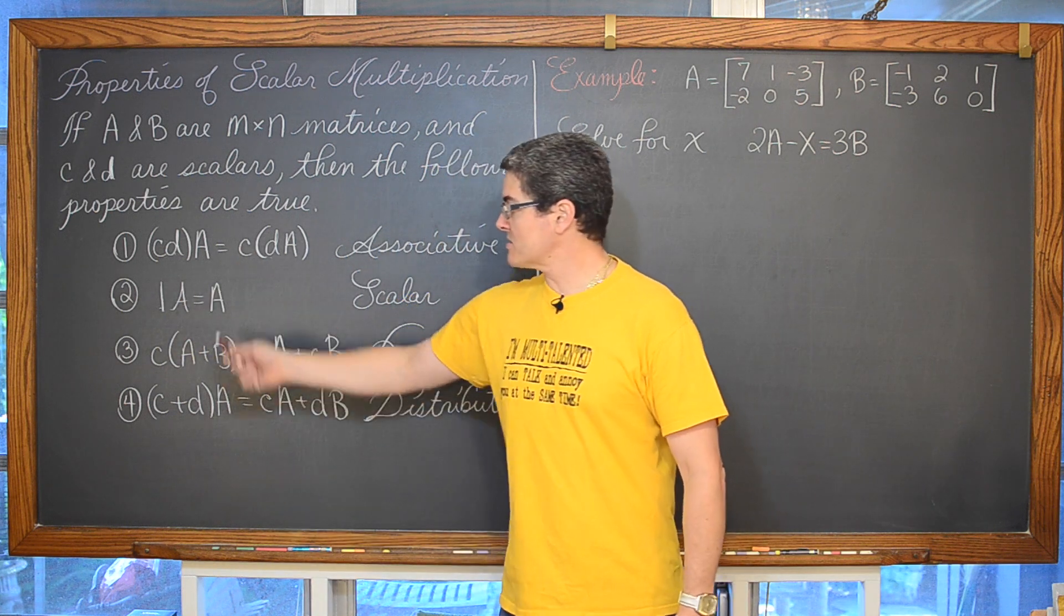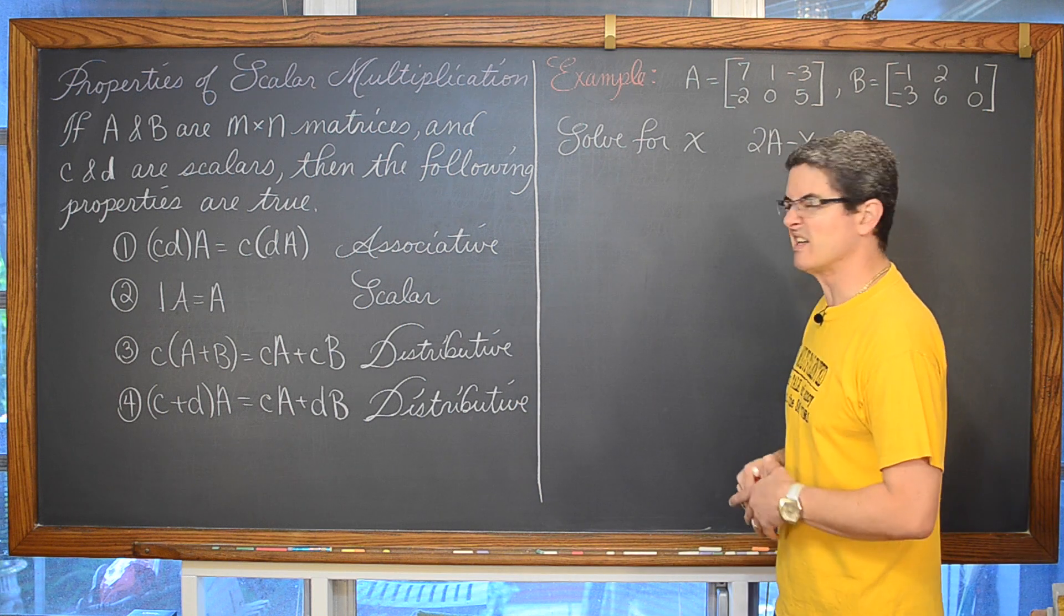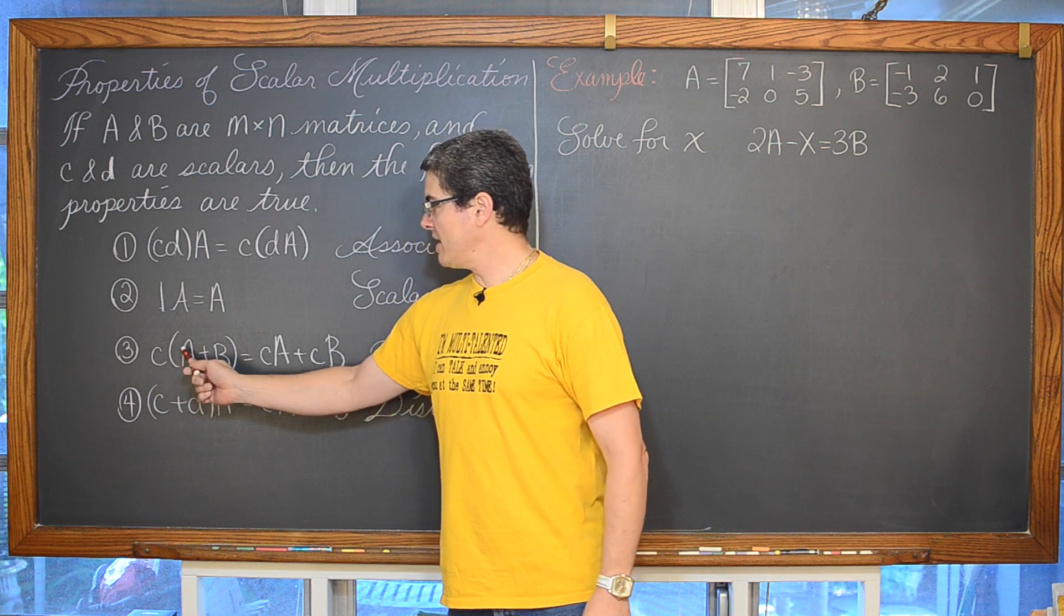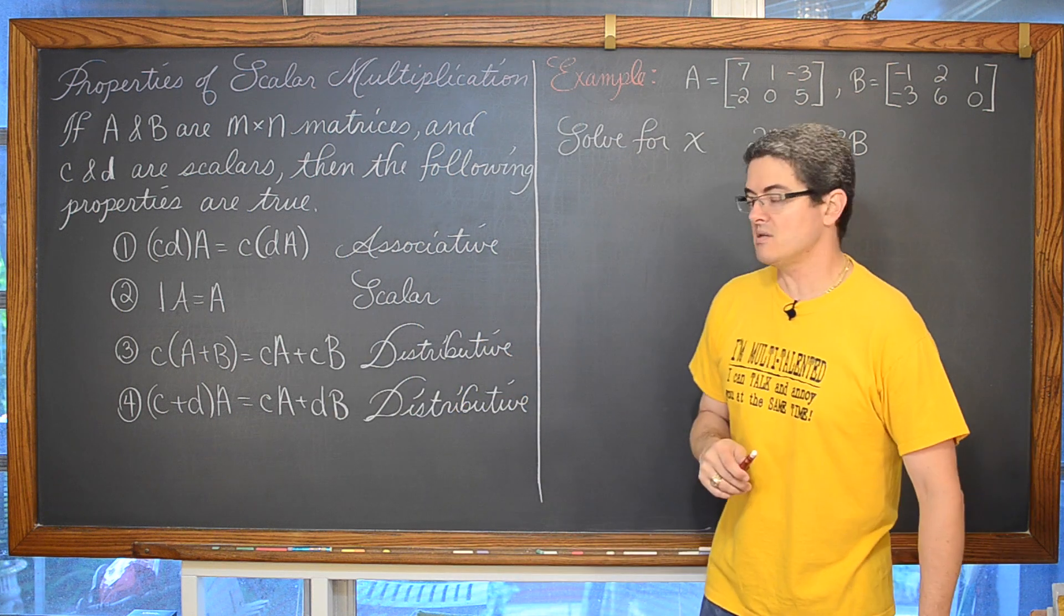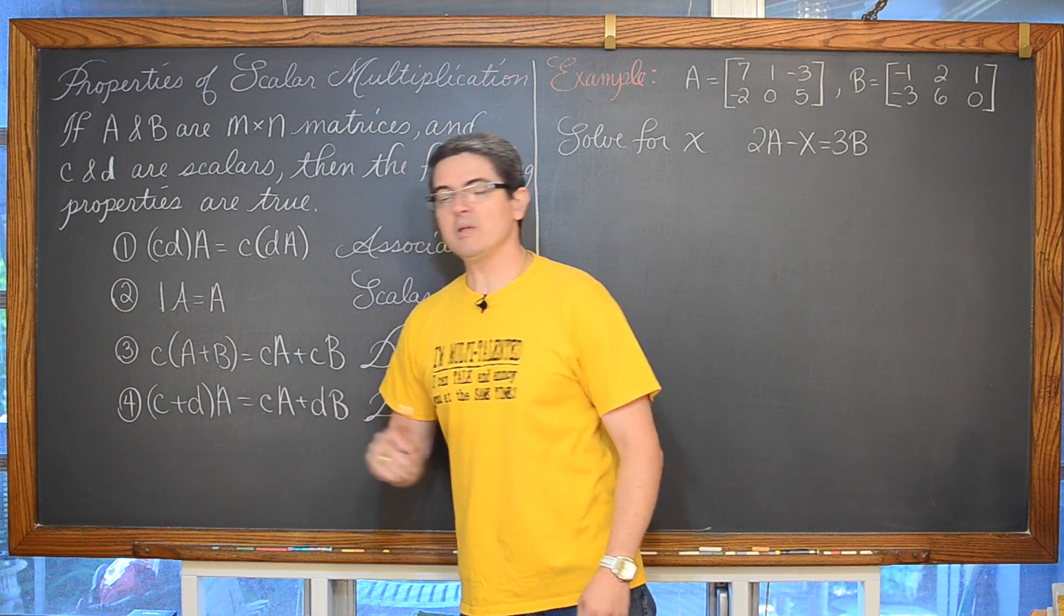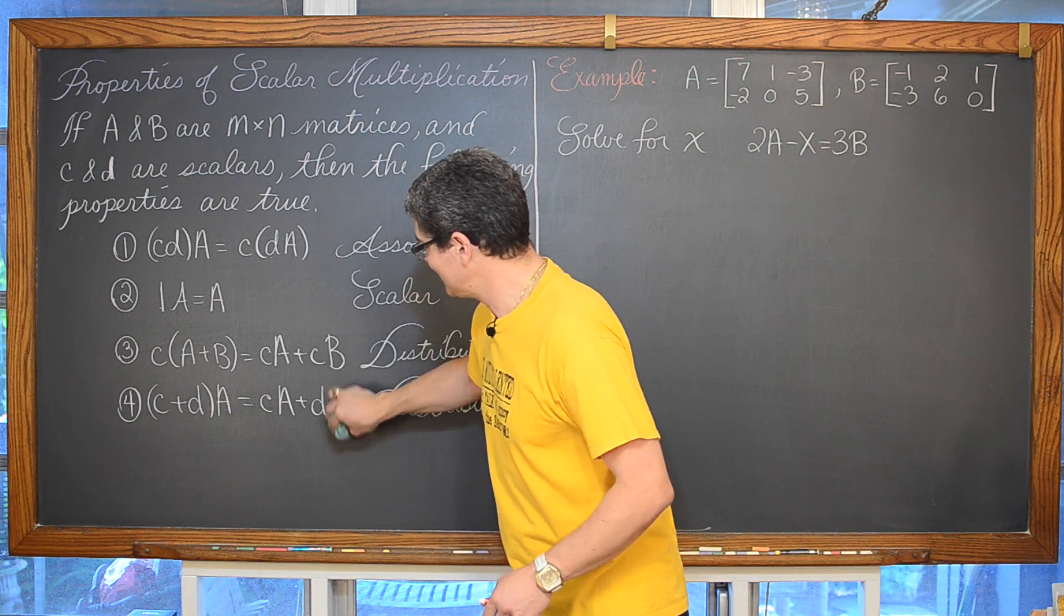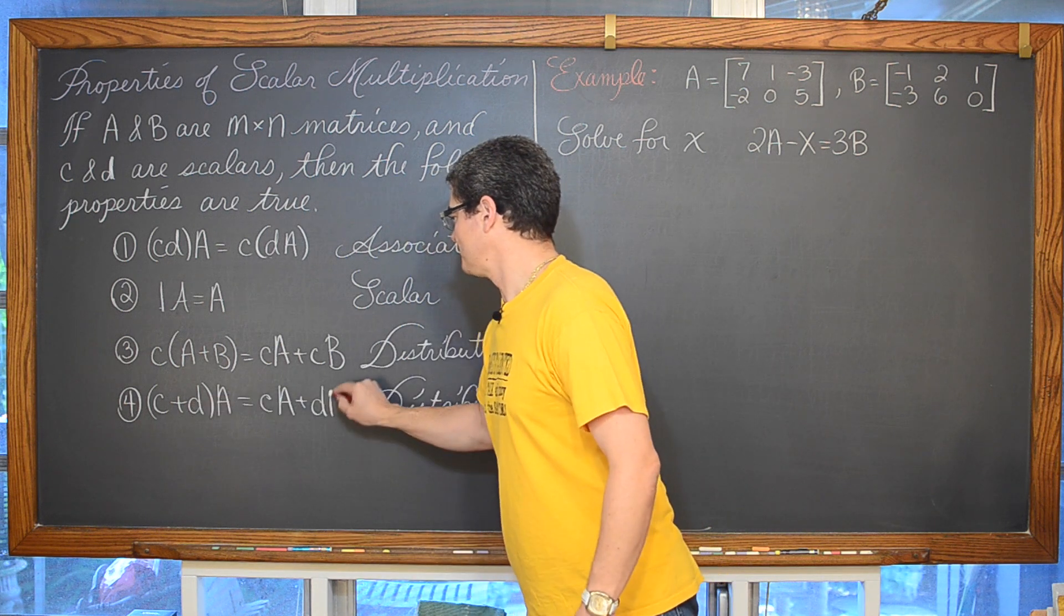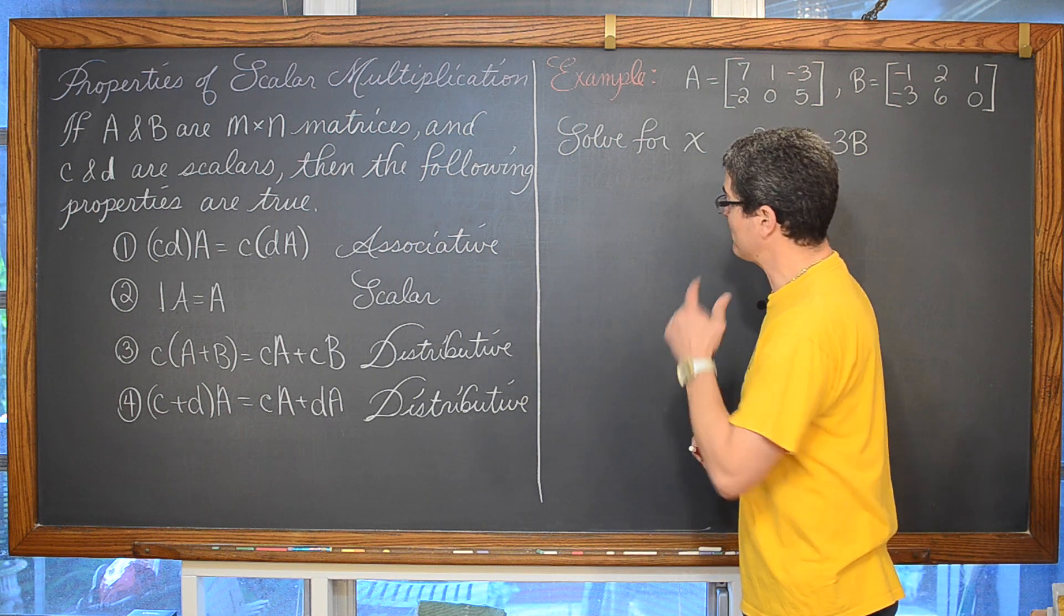One times matrix A is still going to be matrix A. So multiplying by a scalar of one, just like in regular multiplication, it is sort of an identity multiplication. We have the scalar multiple being applied to two matrices being added together. Well you can apply that scalar multiple to each of those matrices individually. Or if you have two scalars being added and then that being applied to matrix A, then you can distribute the matrix A through the adding of those two scalars. Both of those are examples of the distributive property.